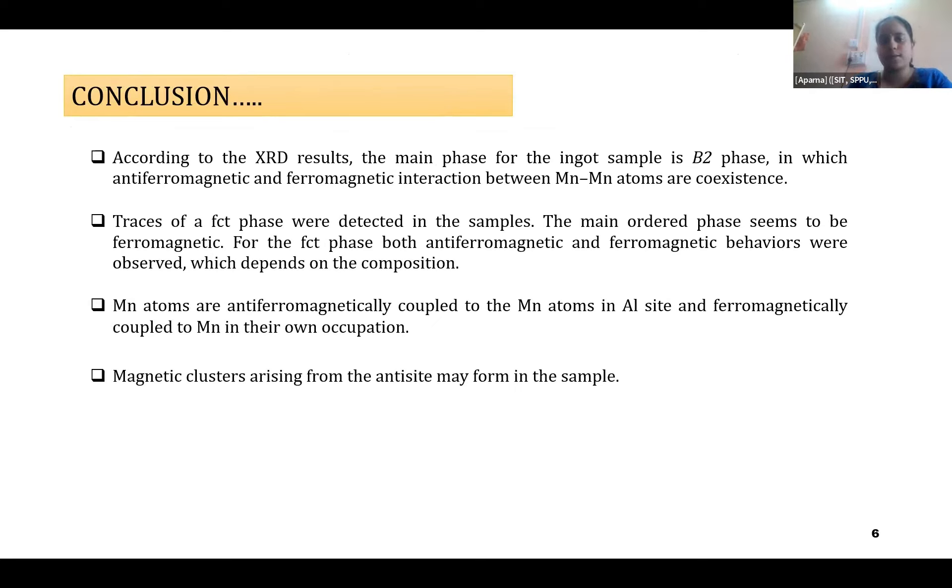So that is the reason why there is a competition of anti-ferromagnetic and ferromagnetic interaction, and even traces of FCT phases were also detected in the samples. This depends upon the composition, and further optimization would be required to develop this material to study for further characterization so that this can be used as a half metallic ferromagnet for engineering application.